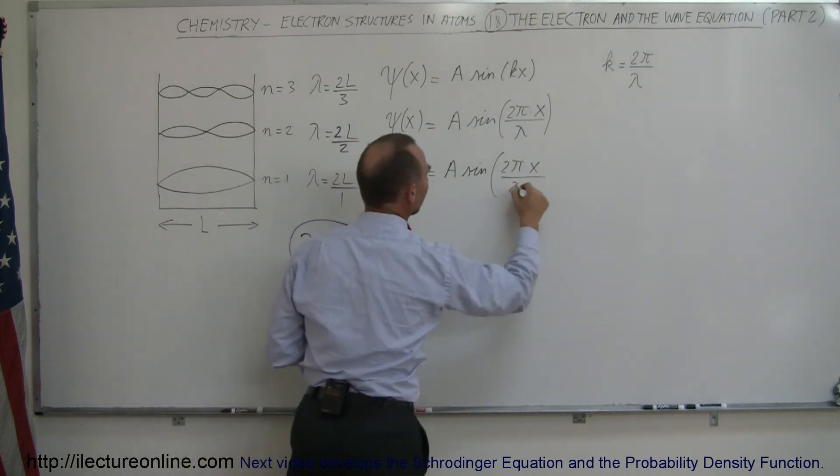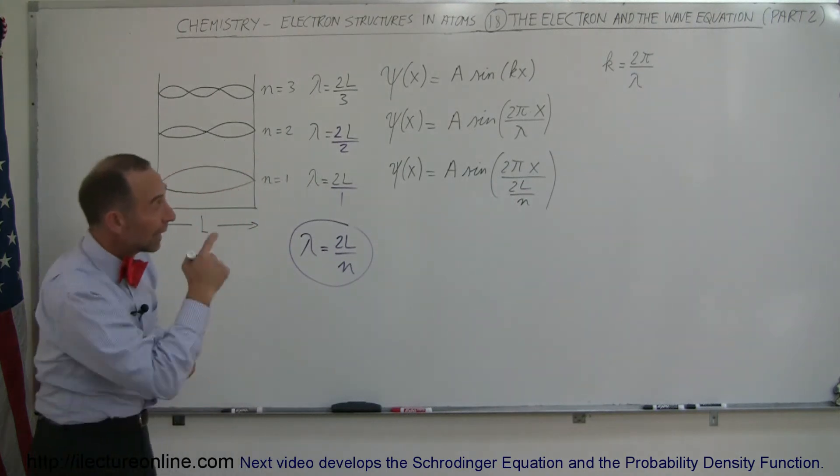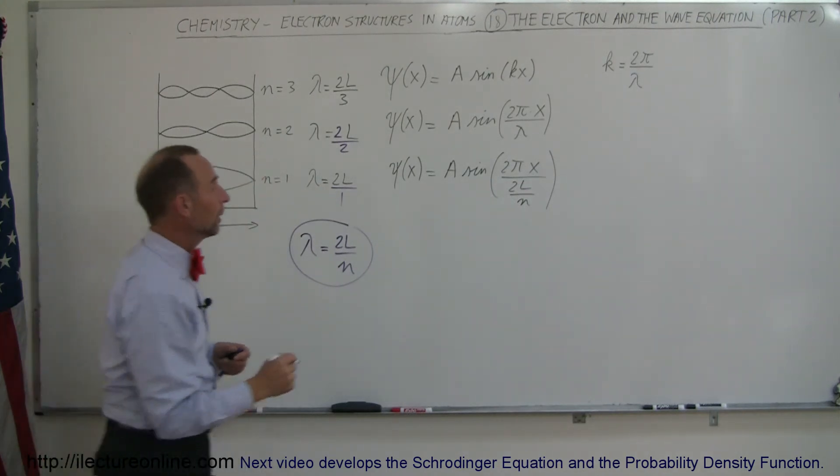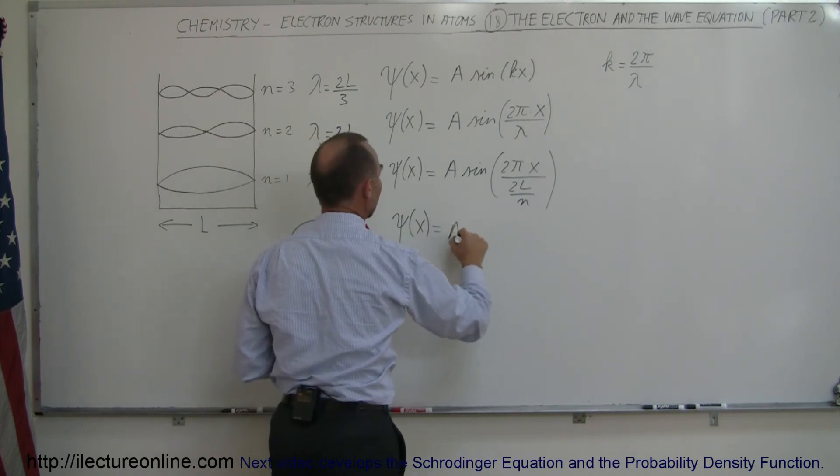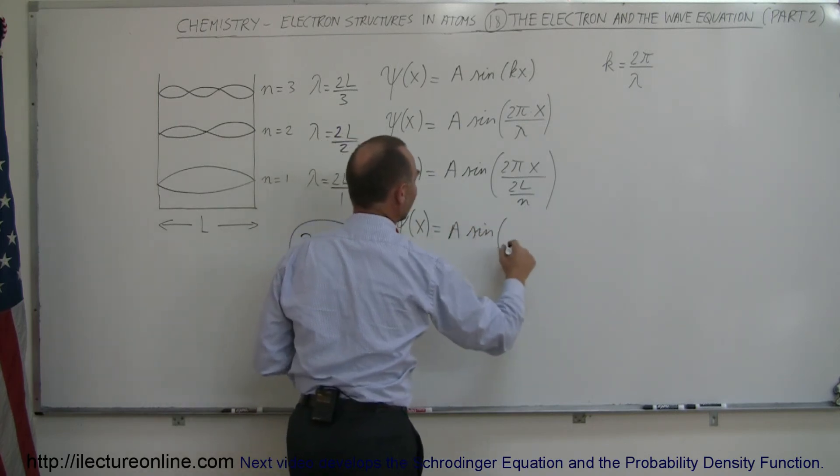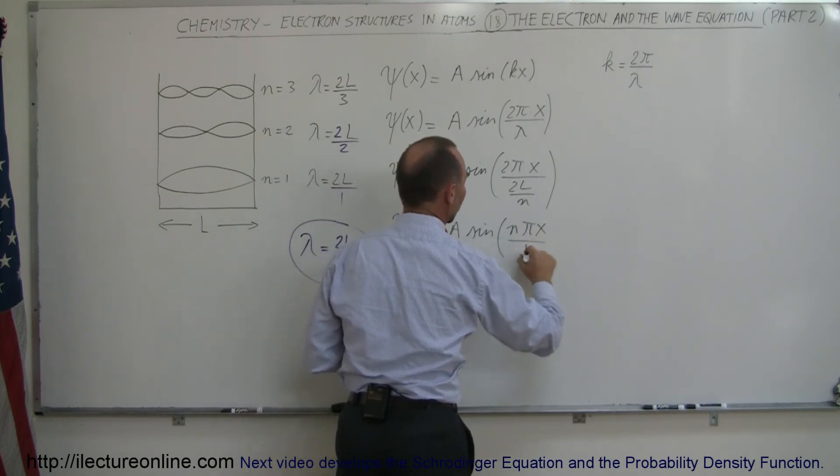lambda, which is 2L over n. We then see that the 2s can cancel and the n in the denominator will go to the numerator. So we can say that the wavelength of x is equal to A times the sine of nπx over L.